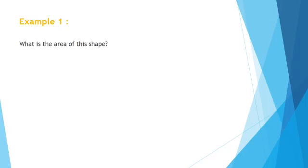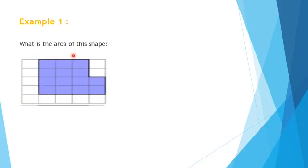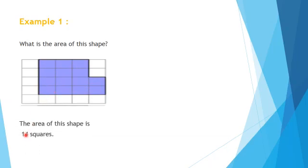Let us solve Example number 1. What is the area of this shape? To find out the area, start counting the number of squares: 1, 2, 3, 4, 5, 6, 7, 8, 9, 10, 11, 12, 13, 14. So the area of this shape is 14 squares.